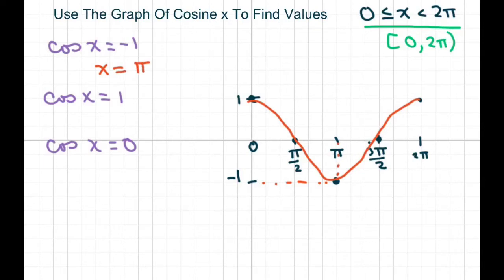Now at 1, we have actually two values: x equals 0 and x equals 2π. But we can't use 2π because it can't equal—it's less than, not equal. So we basically only have one value. At 0, we have two values: x equals π/2 and x equals 3π/2.